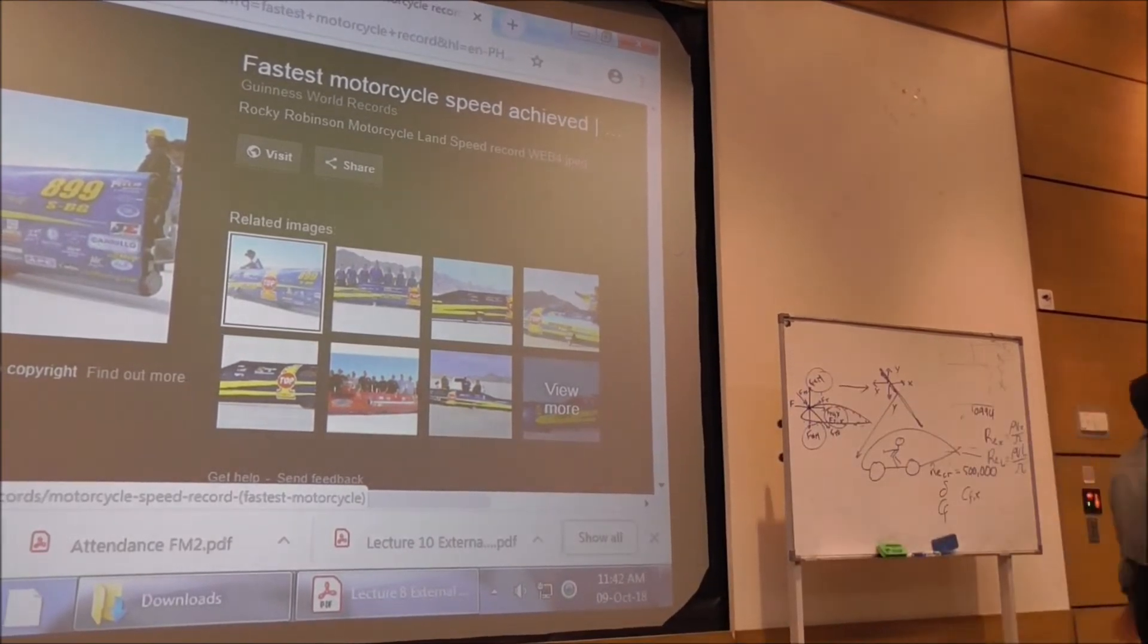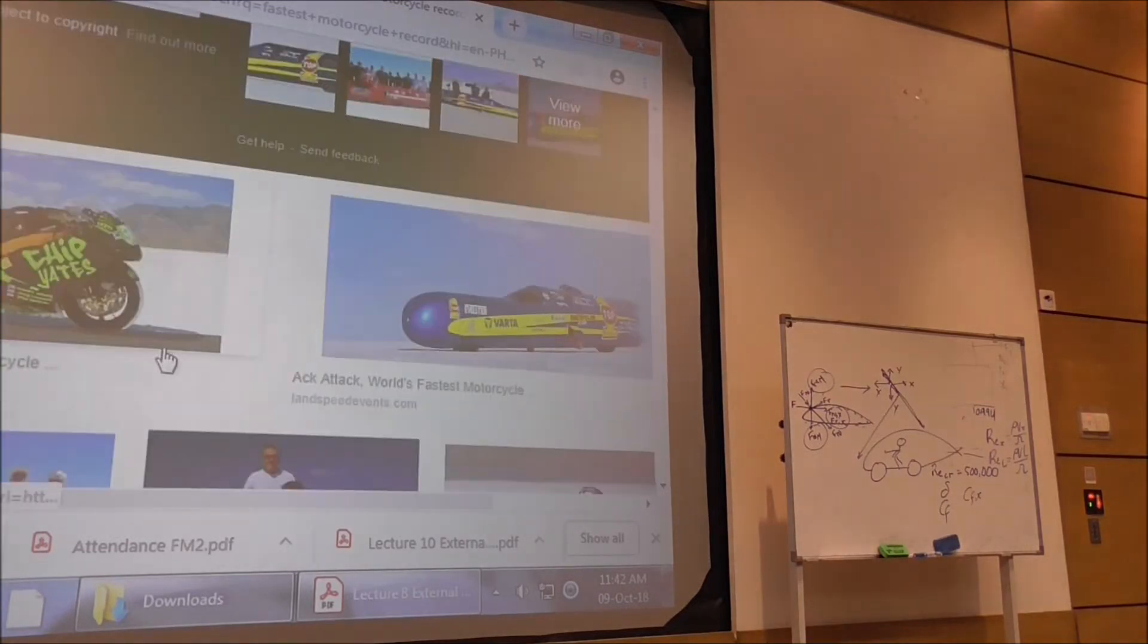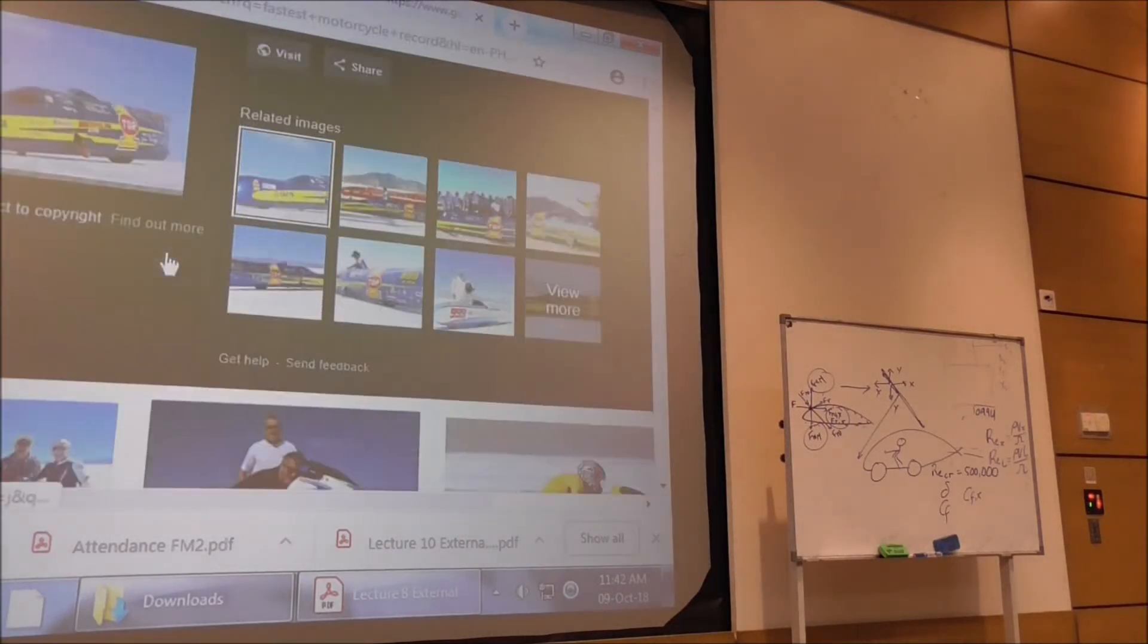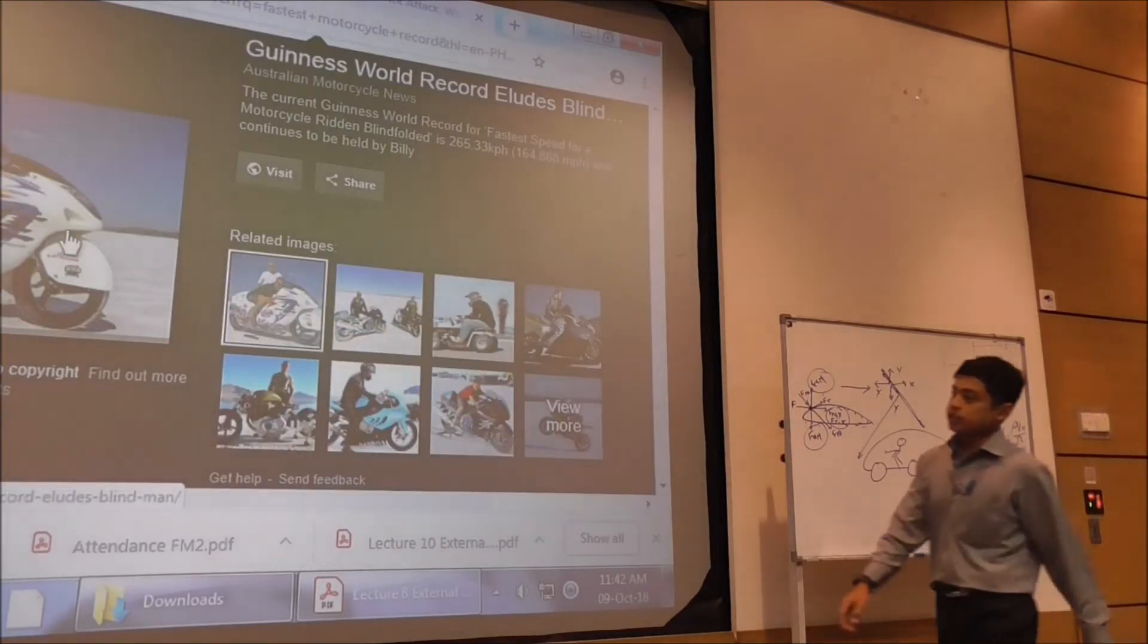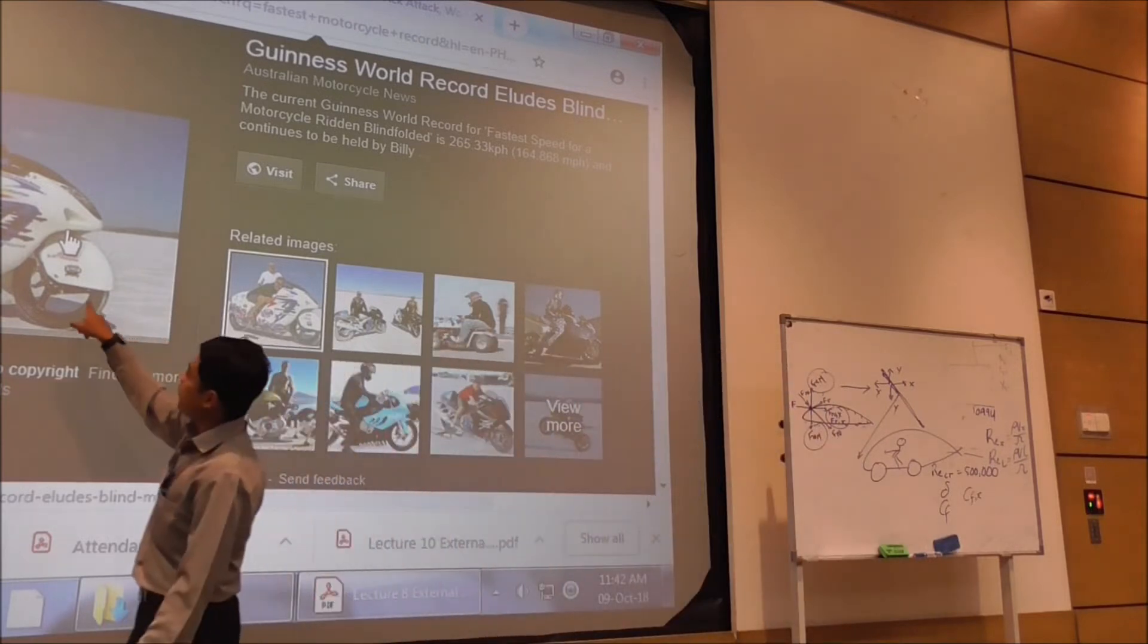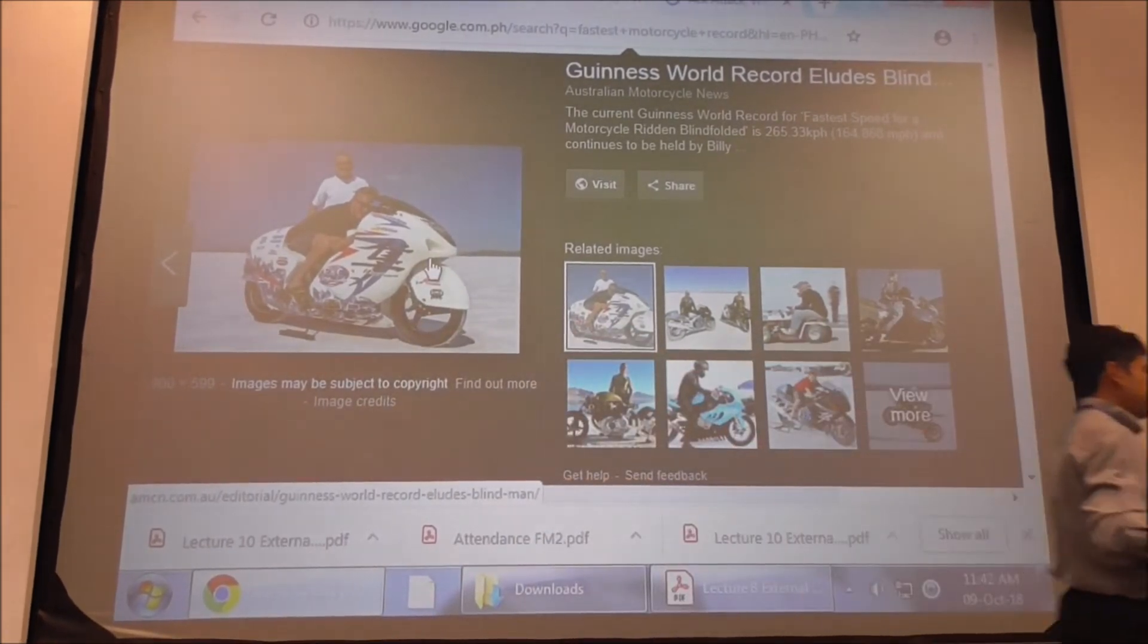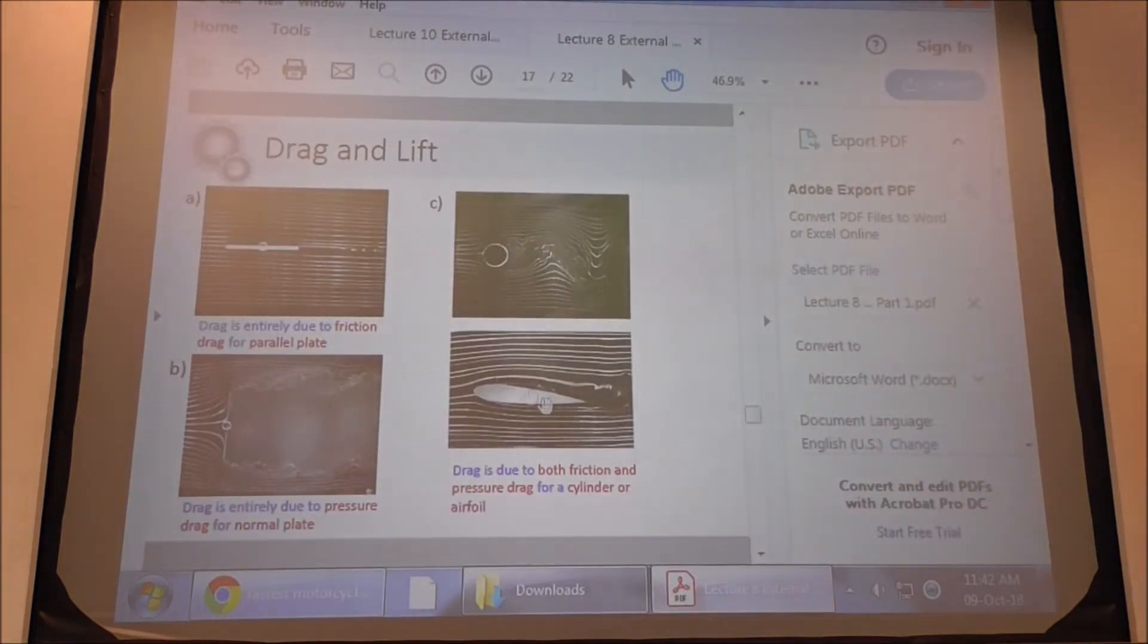The fastest motorcycle in the world doesn't look like a motorcycle anymore, because they cover it up with those things. You won't see it as a motorcycle. If you do this, you see it as a motorcycle. It's fully covered. The reason why it's fully covered is you want to remove the shape and the protrusions.